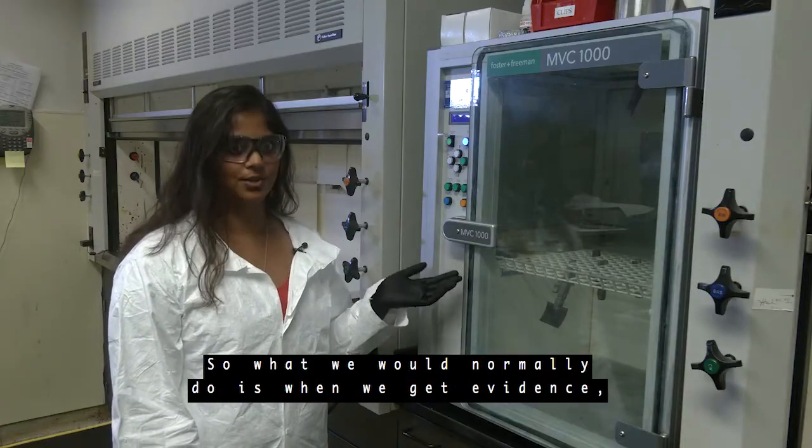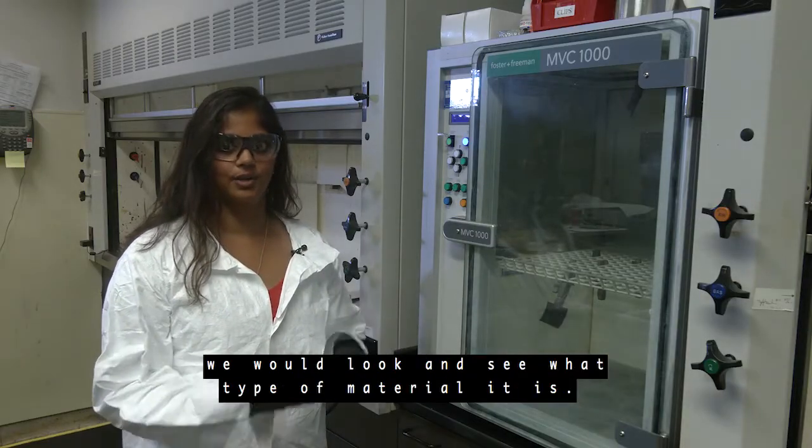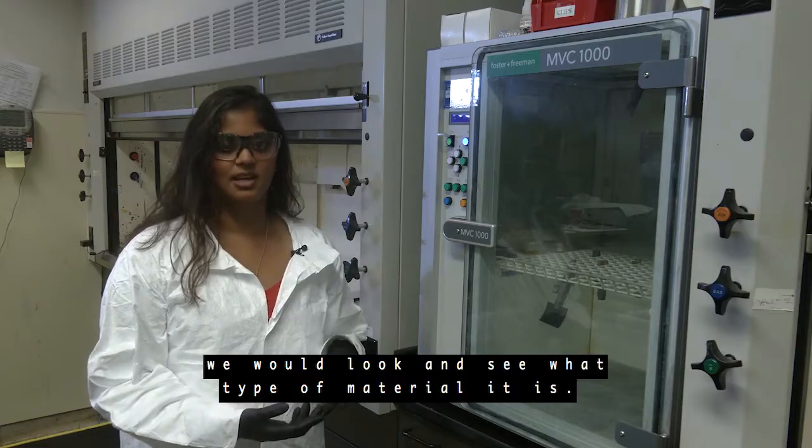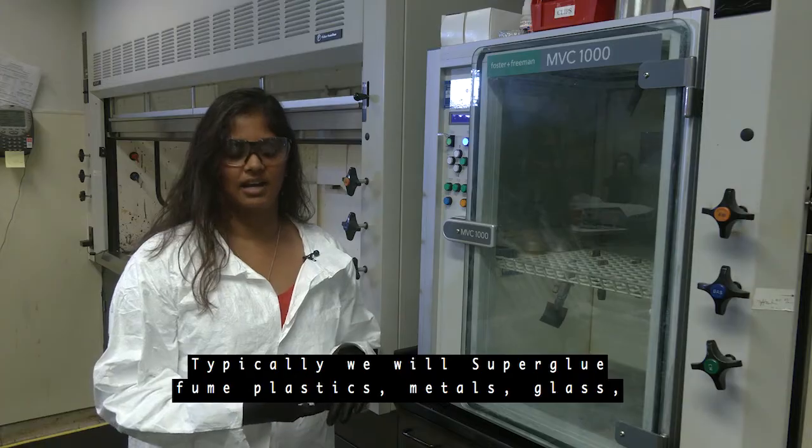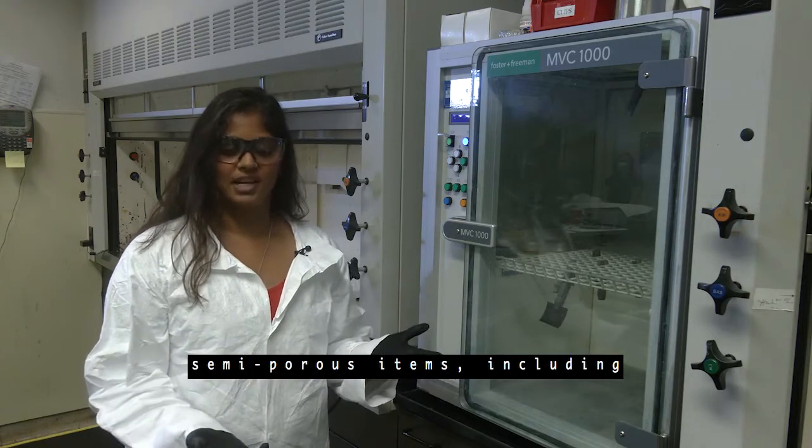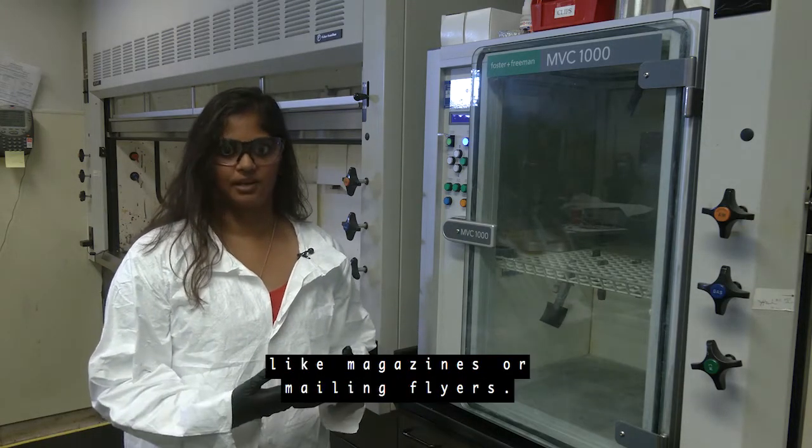So what we would normally do is when we get evidence we would look and see what type of material it is. Typically we will superglue fume plastics, metals, glass, semi-porous items including magazines or mailing flyers.